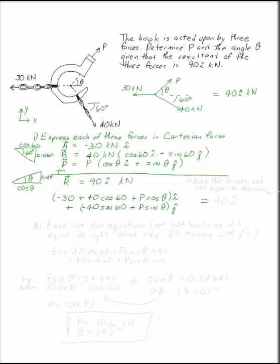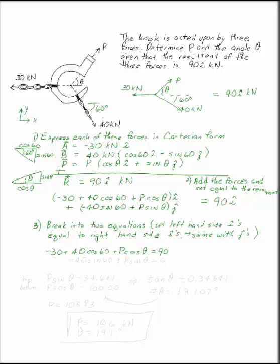These two things, if I add them up, have to be equal to 90i. That means the i parts have to be equal, and the j parts have to be equal. So we can break this into two equations: negative 30 plus 40 cosine 60 plus P cosine theta equals 90, and negative 40 sine 60 plus P sine theta equals zero.